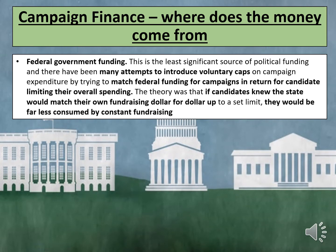Finally, there is federal government funding. This is the least significant source of political funding, and there have been many attempts to introduce voluntary caps on campaign expenditure by trying to match federal funding in return for candidates limiting their overall spending. The theory was that if candidates knew the state would match their own fundraising dollar for dollar, they would be far less consumed by constant fundraising. This did work for a time, but when Obama rejected it in 2008 — calculating that he could raise more money by his own efforts than the limits set by accepting federal funding — neither Biden nor Trump accepted state funding for the 2020 election.